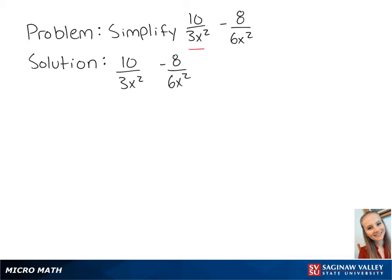For this problem, let's subtract these two rational expressions. The first thing we want to do is find a common denominator. So if you multiply the first fraction by 2 over 2,